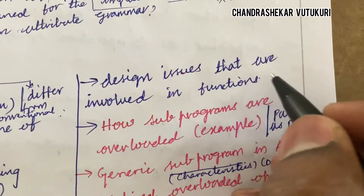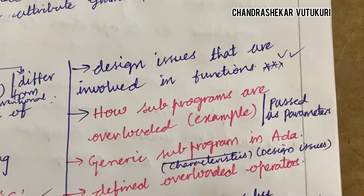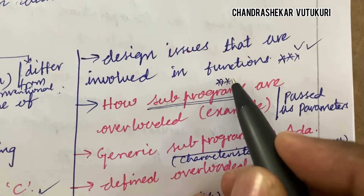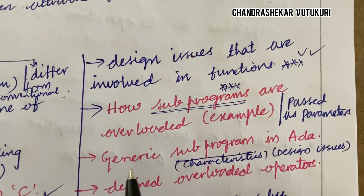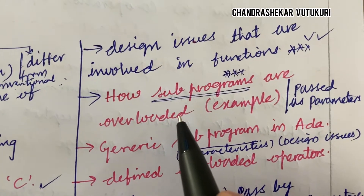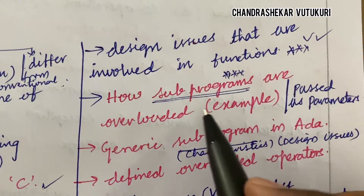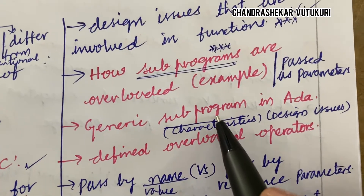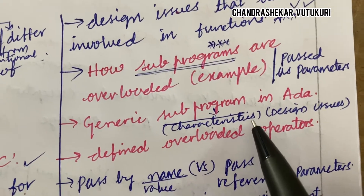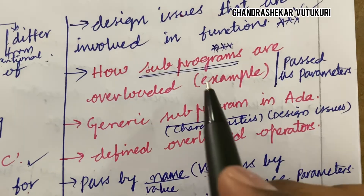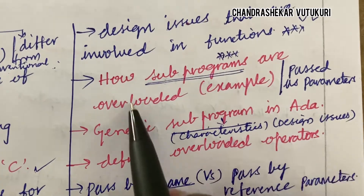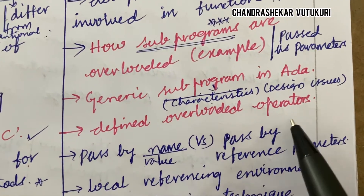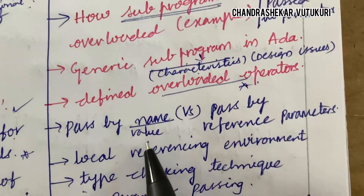Design issues involved in functions — you are going to get one question for sure. Related to subprograms, you need to work and concentrate — a subprogram-related question will cover overloading along with examples, how subprograms are passed as parameters, generic subprograms in ADA, and subprogram characteristics as a short question. Design issues related to subprogramming — you may be getting a 5-mark or short question. Define overloaded operators is also a sure short question.